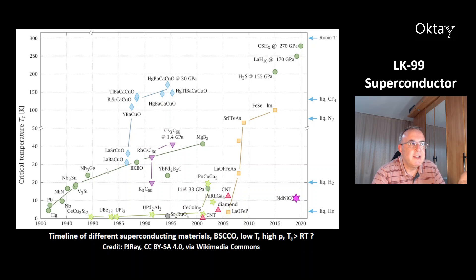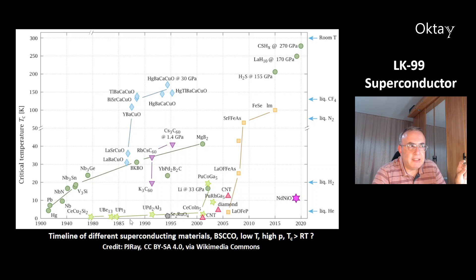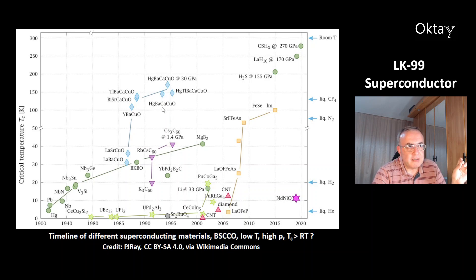You can see all kinds of compounds can be superconducting materials — for example, some elements, some alloys. Here are the fullerides, which are ions of the fullerene football molecule. And in the 80s, there was another breakthrough: the cuprate superconductors.